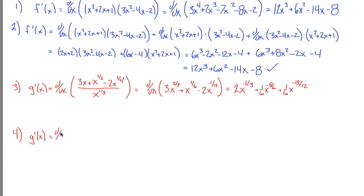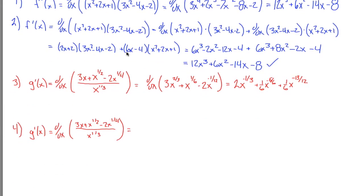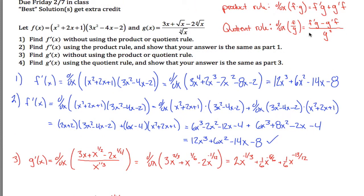I want to take the derivative of 3x plus x to the 1/2 minus 2x to the 1/4, all divided by x to the 1/3. Same question as before, but that's kind of where the similarities end. Above, I didn't want to take the derivative of a quotient, and it said don't use the quotient rule. In part 4, it says to use the quotient rule, so I'll take the derivative directly exactly as written — by referencing the quotient rule.